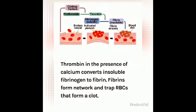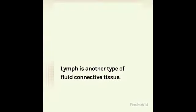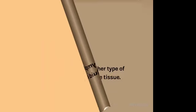Thrombin, in the presence of calcium, converts insoluble fibrinogen to fibrin. Fibrin forms a network and traps RBCs to form a clot. Now lymph is another type of fluid connective tissue.